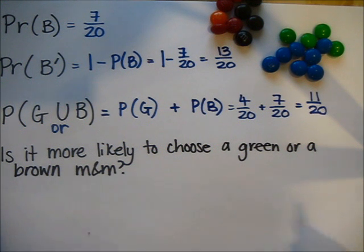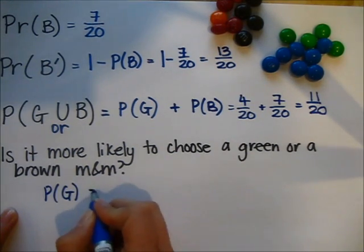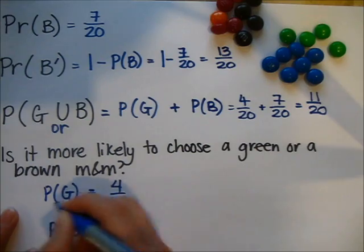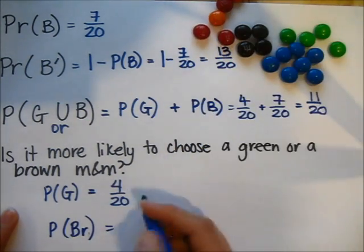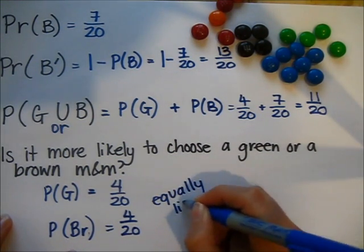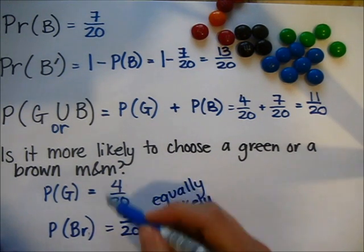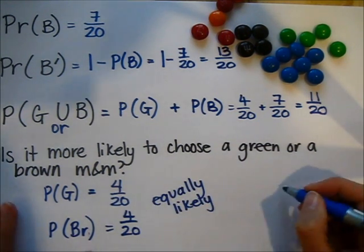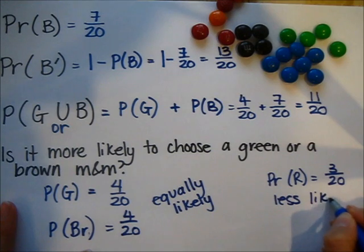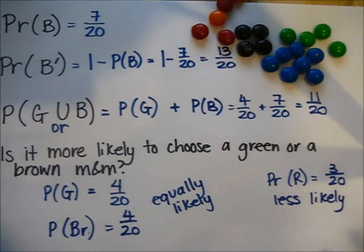Is it more likely to choose a green or a brown M&M? The probability of choosing a green one is 4 twentieths, and the probability of choosing a brown one is also 4 twentieths. So that was a bit of a trick question — it is equally likely that you choose either green or brown because they have the same probabilities. But if I then ask what's the probability of getting a red, there are only 3 red M&Ms, so the probability is 3 twentieths — it would be less likely that I would choose a red one rather than a green or brown one.